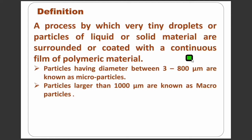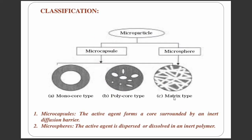Particles having a diameter between 3 to 800 micrometers are called microparticles. Particles larger than 100 micrometers are known as macroparticles. Particles having a diameter less than 1 micrometer are called nanoparticles.